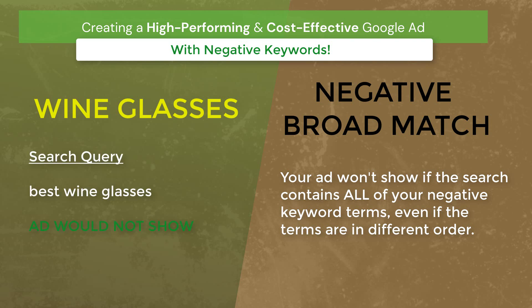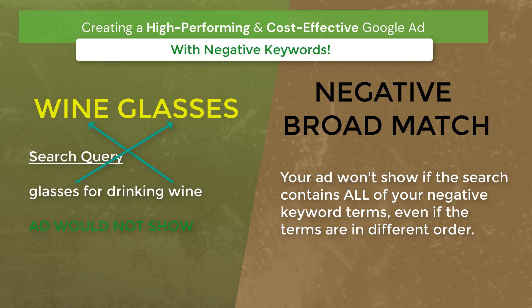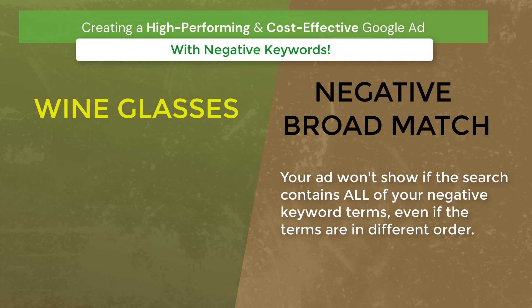If they search best wine glasses, your ad wouldn't show because both wine and glasses are in the search term. If they searched glasses for drinking wine, both words show up so your ad would not display. But if they entered which glass should I use to drink wine, that wouldn't work because you entered wine glasses plural. With negative keywords, they won't match to close variants, so you need to have plural and singular words both entered separately — wine glasses and wine glass.